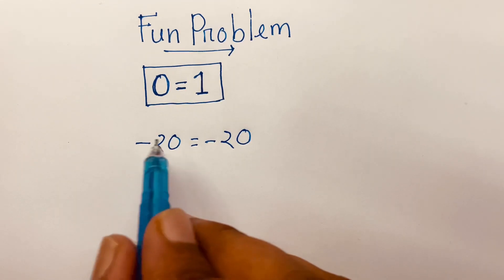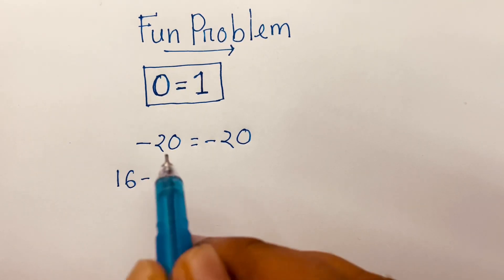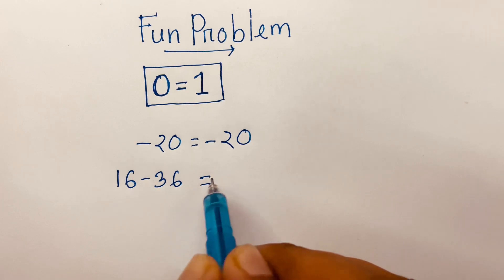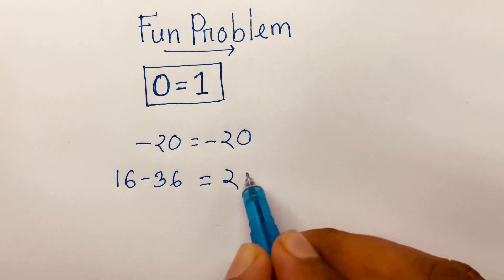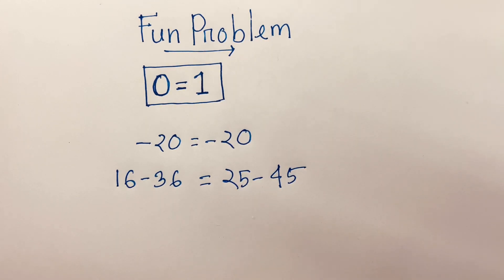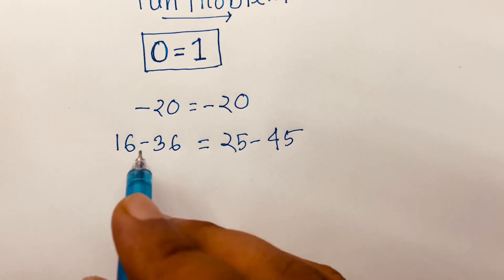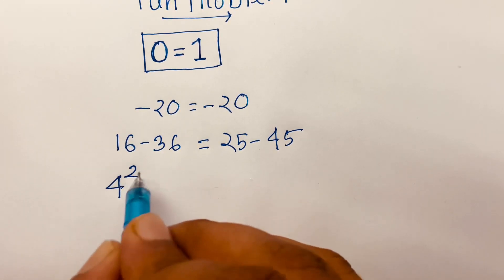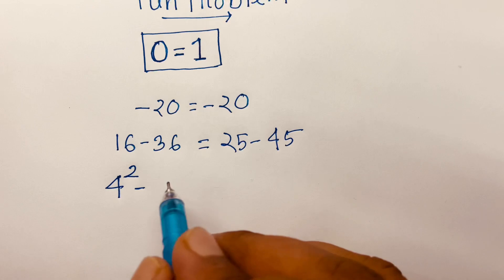First of all, I can say minus 20 is equal to minus 20. Then I can say minus 20 as 16 minus 36, which is equal to minus 20 as 25 minus 45.